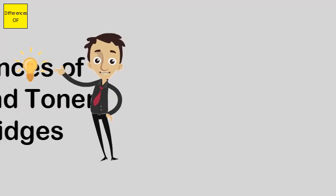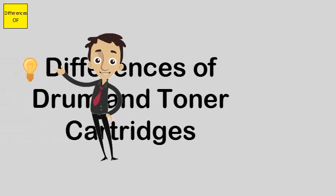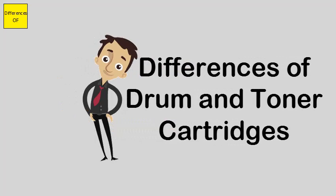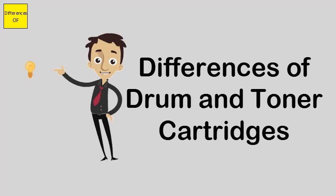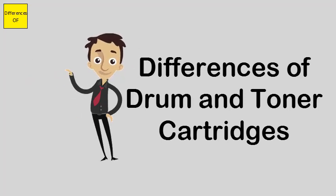Difference between drum and toner cartridges. The drum is a mechanism designed as a revolving drum that transfers the toner coming out of the toner cartridges to the paper. The toner cartridge stores the toner powder which helps to print and make images and text on paper.